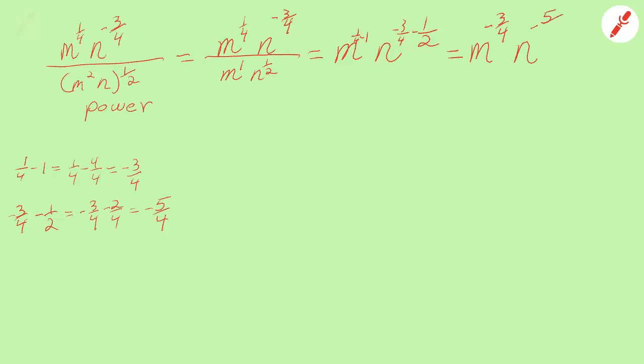Both of these powers, both of these exponents are negative, so they're both going down to the denominator. Here's the fraction bar. The denominator is below it.